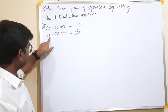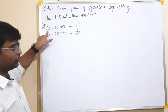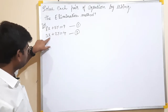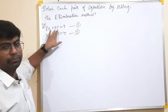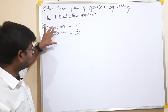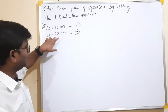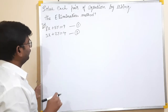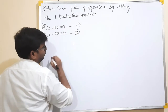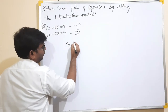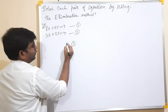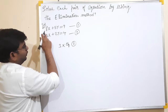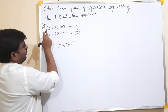Since the x-coefficients are 3 and 8 respectively, we need to make them equal. We multiply equation 1 by 3 multiple times, and equation 2 by 8 multiple times, so that the x terms become the same.